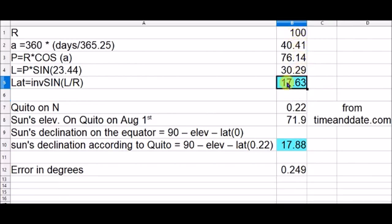So that is the declination of the Sun on Earth on that specific day. As we see here, there's an error of almost a quarter of degree.